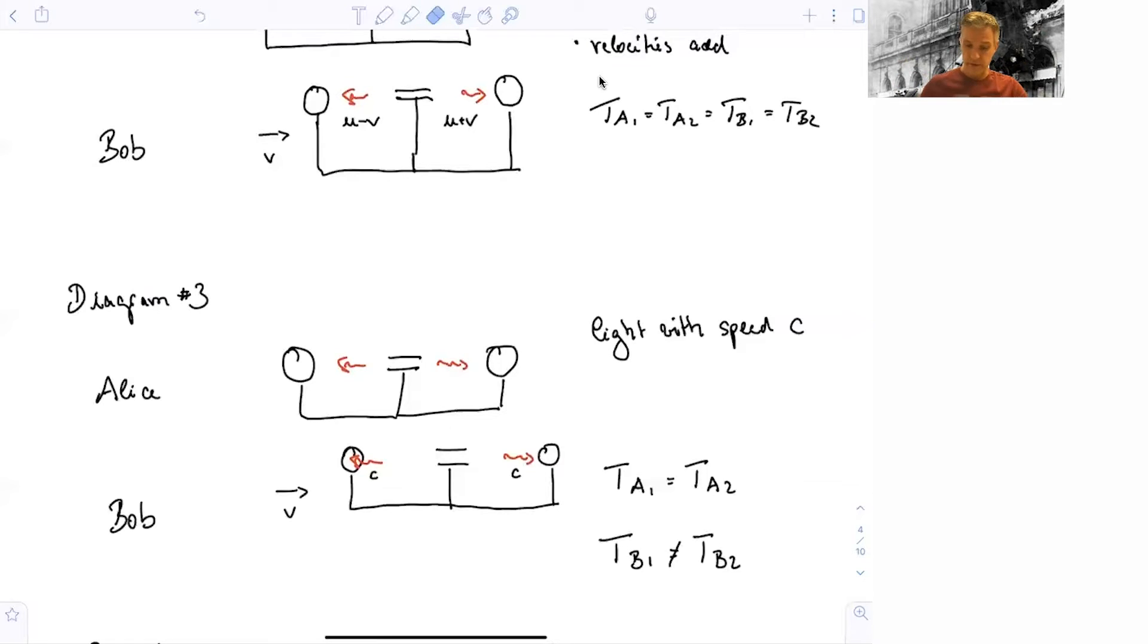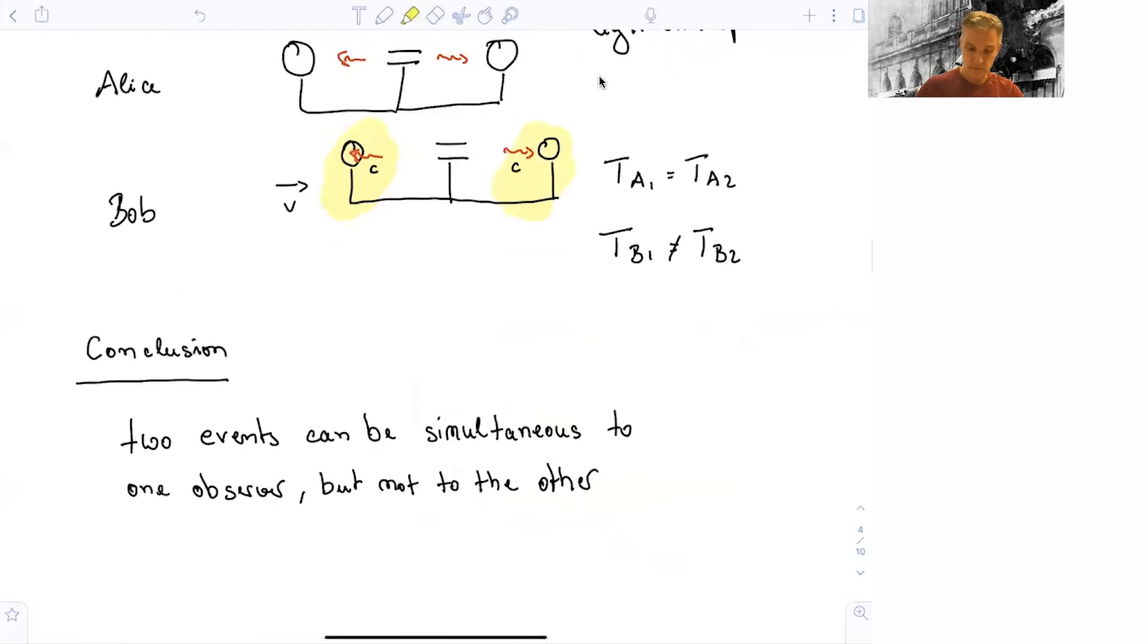While for Bob, this is clearly not the case. You can see here that this lagging clock is being hit first, while the leading clock is hit a little while after. So if Bob and Alice now meet and they discuss whether or not those two events happen simultaneously, they will disagree. For Alice, those two clocks were hit simultaneously at the same time for her. While for Bob, the first clock was hit first, and the leading clock was hit second.